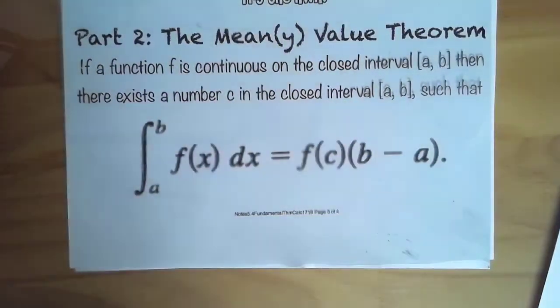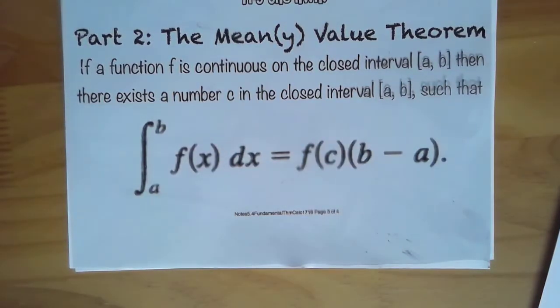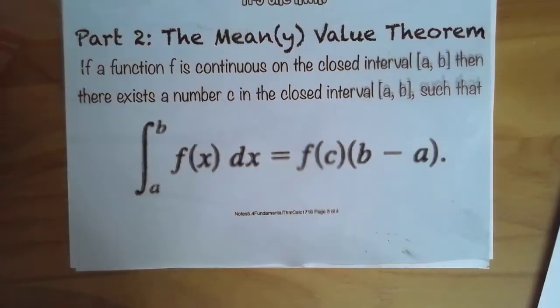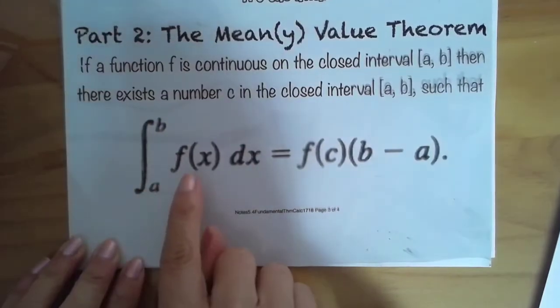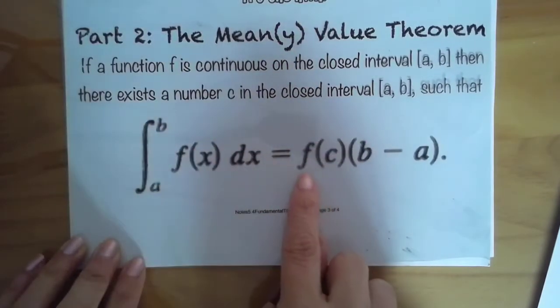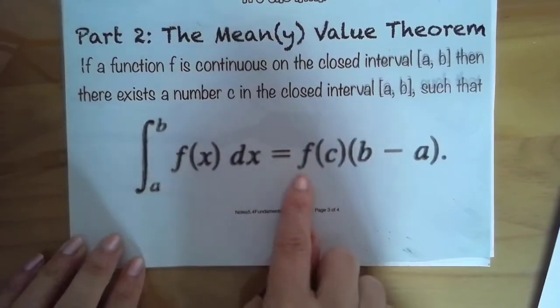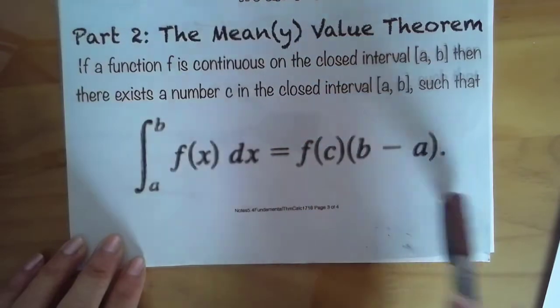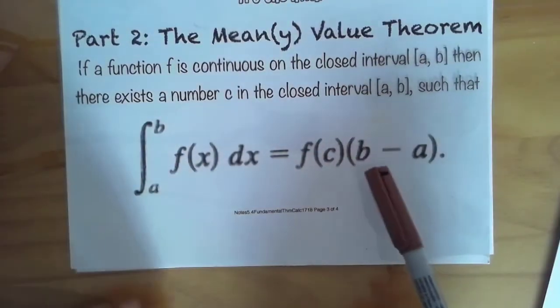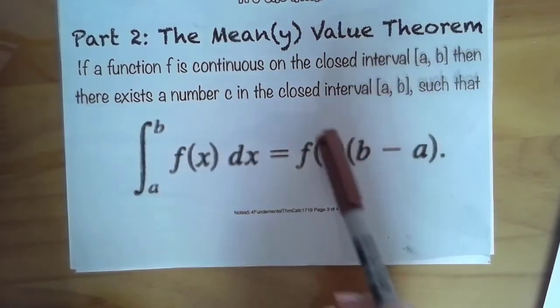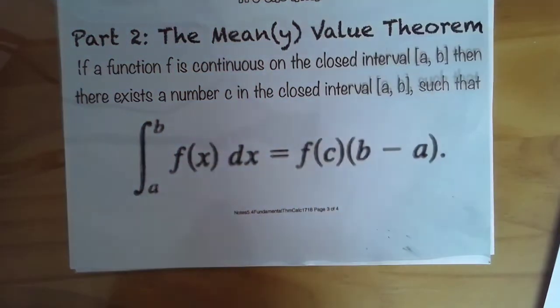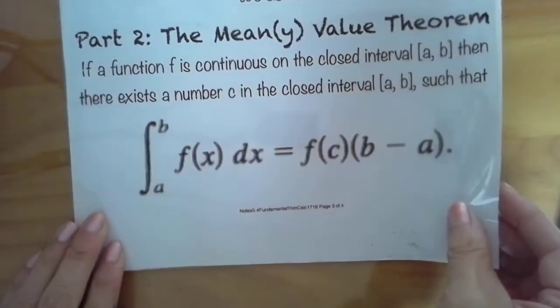Okay, so let's start with the mean value theorem, or the mean-y value theorem, I like to call it. If a function f is continuous on the closed interval [a, b], then there exists a number c in the closed interval [a, b] such that if you take the integral of f(x) dx from a to b, there's this f(c), it's the same thing as f(c) times (b minus a). What the factor is this saying you're asking? It's all going to make sense. I mean, if you notice (b minus a), isn't that really the width, and isn't this really the height? Remember when we were doing the area initially? So I'm going to show you how this works.